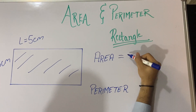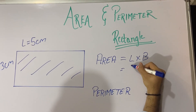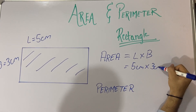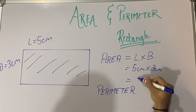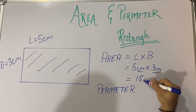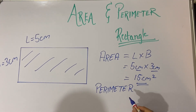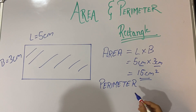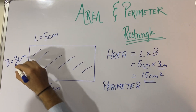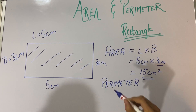The area is length into breadth. Length is 5 centimeter and breadth is 3 centimeter, so 5 into 3 is 15 centimeter square. The perimeter is the sum of all the sides; the opposite sides are equal, so one pair is 5 centimeter and the other pair is 3 centimeter.